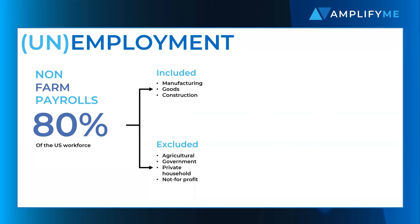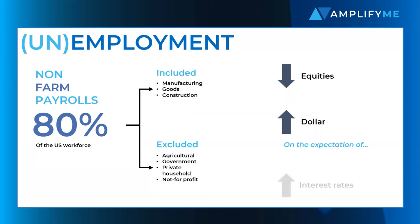The markets want to know the month-on-month change in non-farm payrolls. In a tight labour market, if non-farm payrolls are higher than expected, you might expect to see equities move lower and the dollar strengthen, on the expectation that interest rates might rise to curb the inflationary pressures of low unemployment.